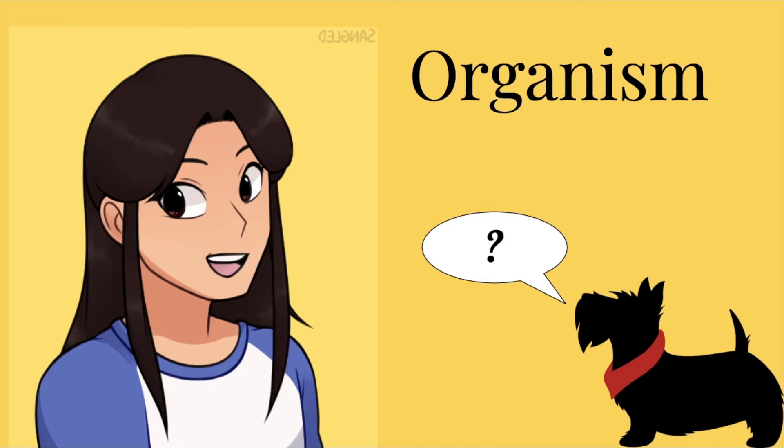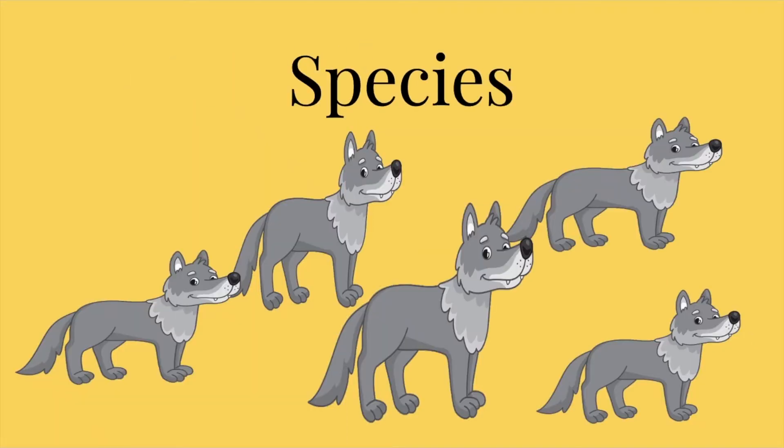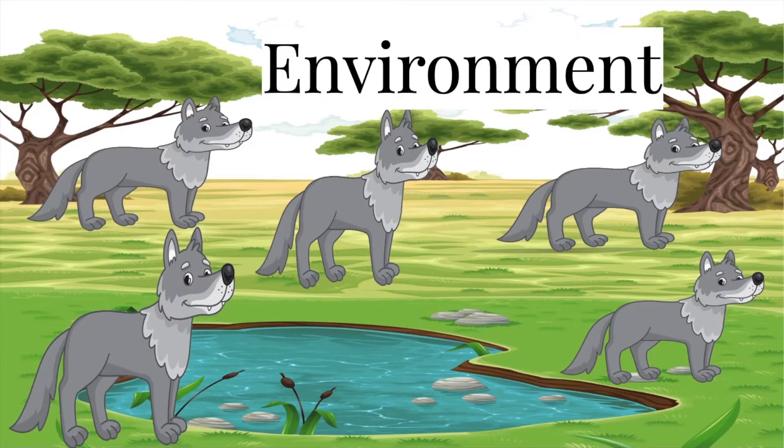Wow, so how do organisms go through evolution? Well, Scotty, first we have a population of organisms of the same species that exists in an environment.